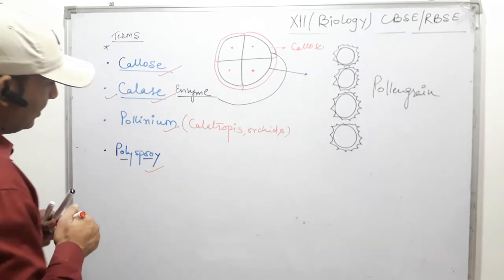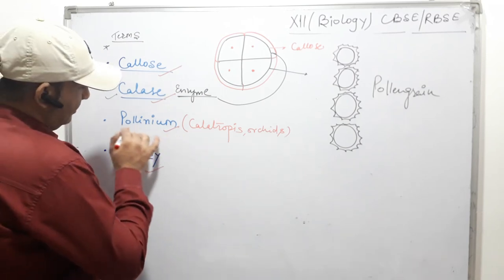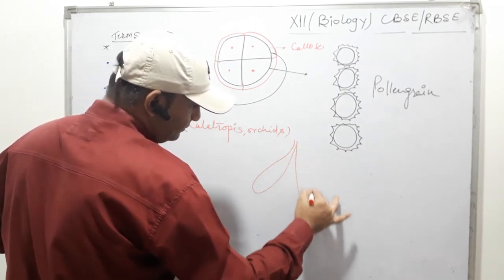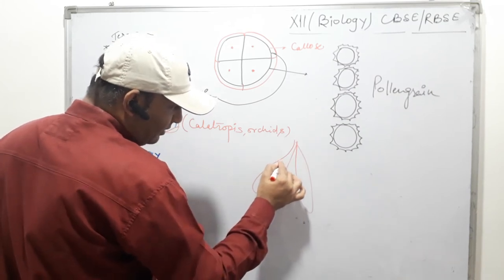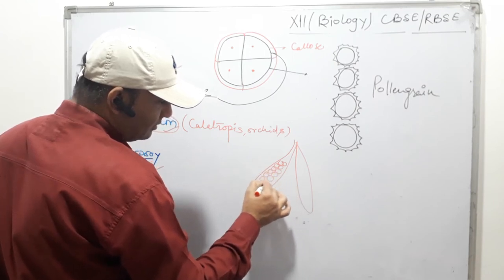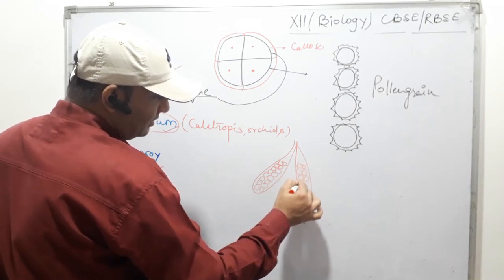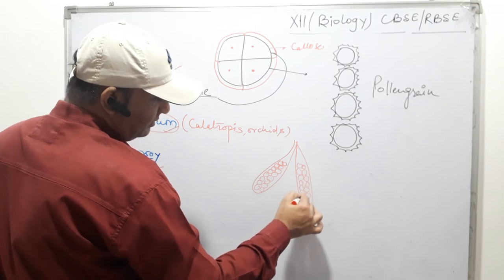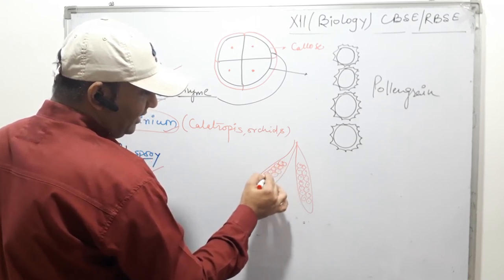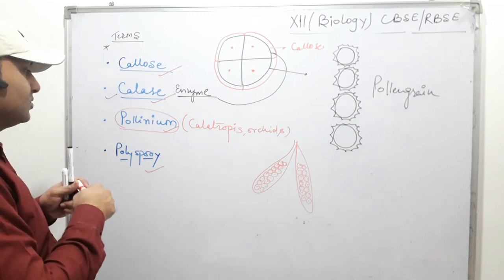Third term is polyneium. In some plants, the microspores are unable to dissociate and they remain attached for a long time. This condition is called polyneium. In polyneium, many pollen grains are in joined form — that means the tetrads develop into pollen grains without dissociation. So polyneium means the condition where microspores develop into pollen grains without dissociation, remaining attached.